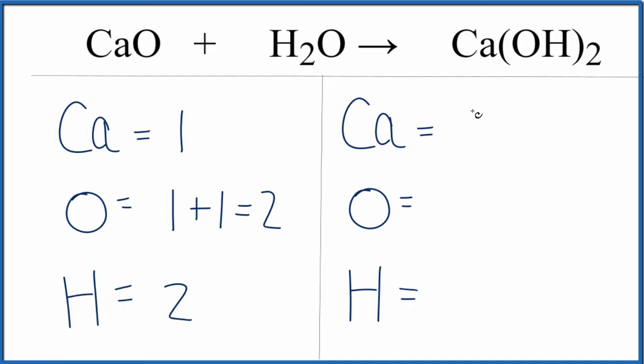Over on the product side, we have one calcium, and then the two here, because this OH, this hydroxide group, is in parentheses, the two applies to the whole OH. So we have two times one, that gives us two oxygens, two times a one hydrogen, that gives us two hydrogens.